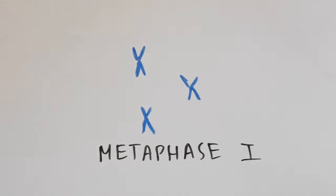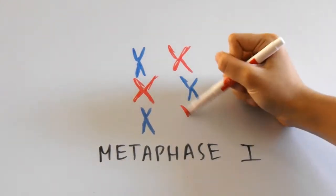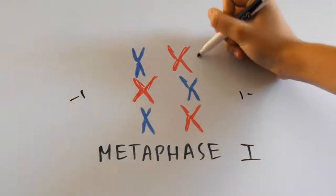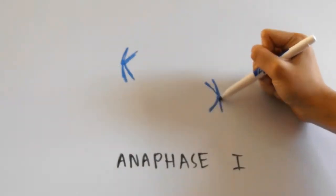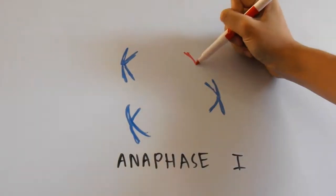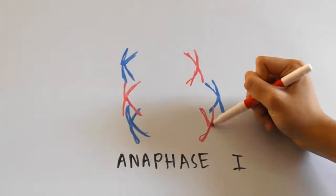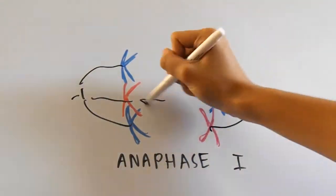Now in metaphase 1, the homologous chromosomes or tetrads will line up at the metaphase plate like in mitosis. Then in anaphase 1, the chromosomes from each parent are pulled apart from each other towards the opposite poles by the centrioles.